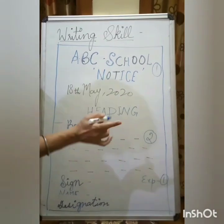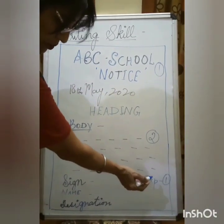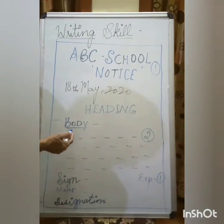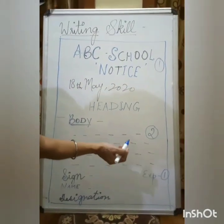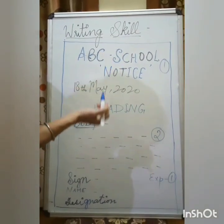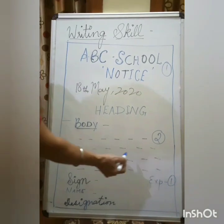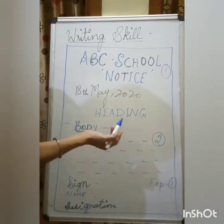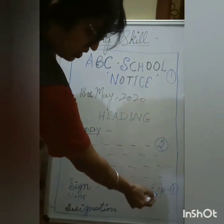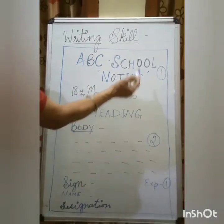So one mark for the format, two for the body — that covers three marks. The final one mark is for expression, which includes how well you have organized your value points, the vocabulary used, grammatical accuracy, and fluency — meaning how well you have linked your statements. This part is known as expression and carries one mark, completing the four-mark division for a notice.